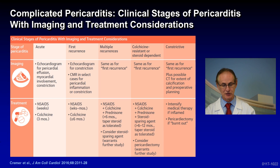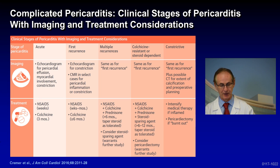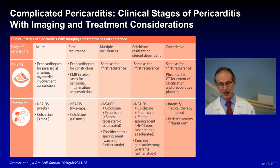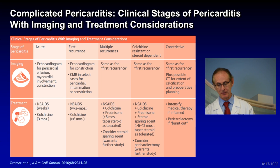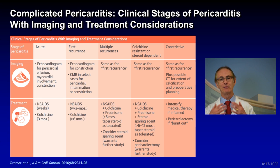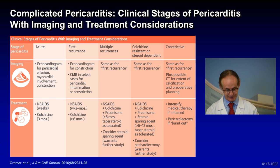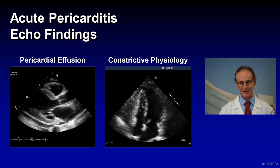The final stage of pericarditis is constriction. Imaging includes echo — the same as for first recurrence — and MRI can be used as well. Sometimes you can do CT scanning to look at calcium around the heart and to preoperatively plan the case. The treatment, if there is inflammation, is to intensify medical therapy with anti-inflammatories, or to perform pericardiectomy if the disease is burnt out.